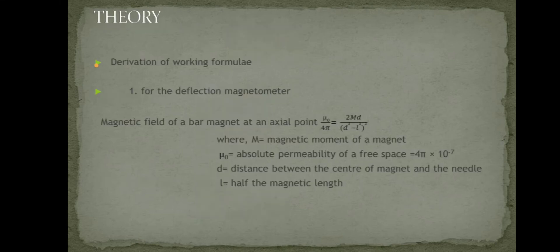Derivation of working formula. For the deflection magnetometer, magnetic field of a bar magnet at an axial point is given by the formula, where M equals magnetic moment of the magnet, U0 is the permeability of free space, D is the distance between the center of the magnet and the needle, and L is half the magnetic length.